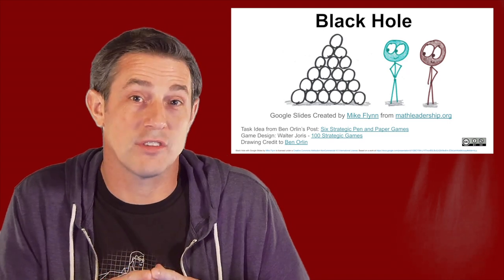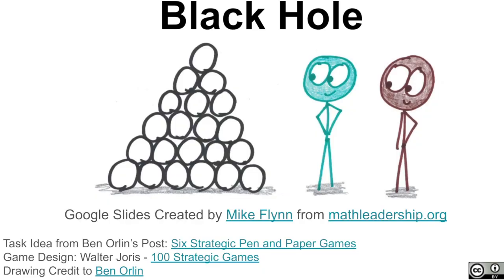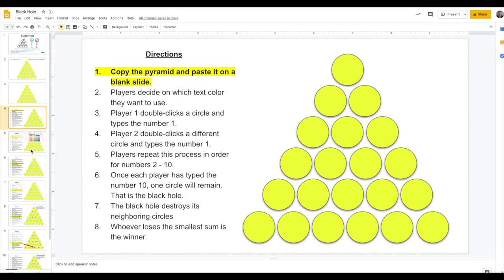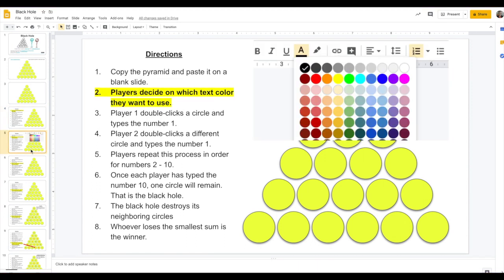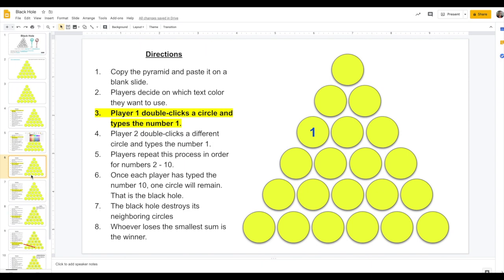So let me walk you through this first game called Black Hole. The gameplay works like this. Once you've copied the pyramid, each player decides which color they'll be for their font. Player 1 will select a circle. You just double-click the circle you want, and you add the number. So in here, it's the first round, so you put 1.